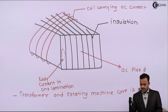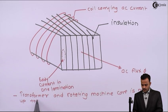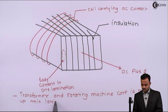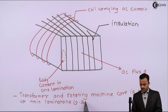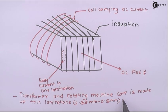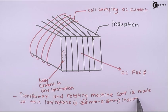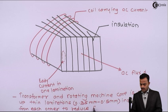...are made up of thin laminations. And the width of this lamination sometimes will be 0.35 mm to 0.5 mm, but these laminations are insulated from each other to reduce eddy current losses.